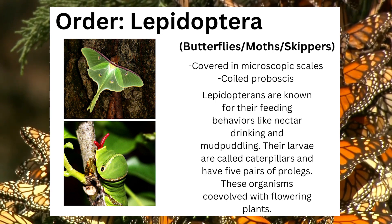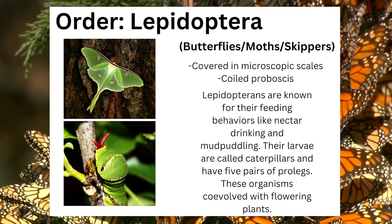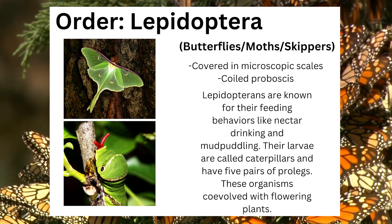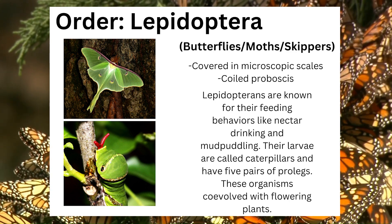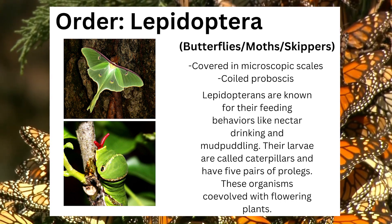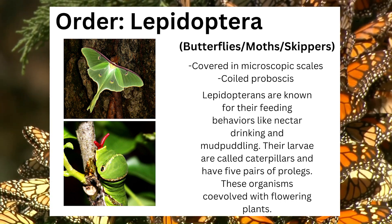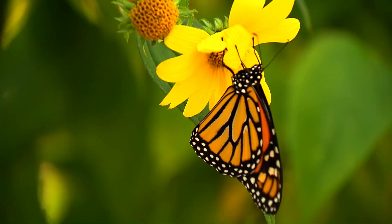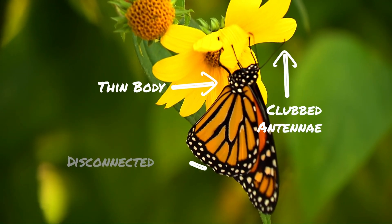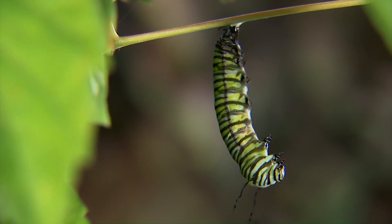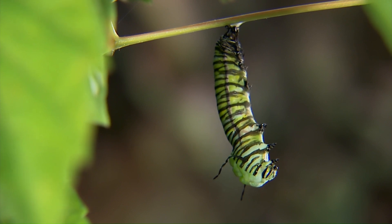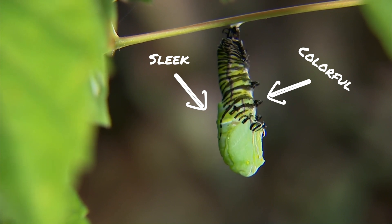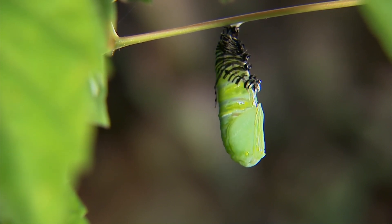Lepidoptera is the order containing butterflies, moths, and skippers. The name Lepidoptera describes the main identifying feature of the group, meaning scale wing. Another key feature of Lepidopterans is their coiled proboscis that adults use for feeding. Lepidopterans are known for their feeding behaviors like nectar drinking and mud puddling. Their larvae are called caterpillars and have five pairs of prolegs. Like bees, these organisms co-evolved with flowering plants. Butterflies can be identified by their thin bodies, clubbed antennae, and disconnected wing pairs. Butterflies develop in a hard chrysalis and rest with wings closed and upright. This group is usually diurnal and almost always colorful. The caterpillars of butterflies are usually sleek and smooth, but many have external projections or coloration that help them keep predators at bay through colorful warnings and cryptic camouflage.